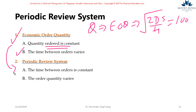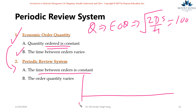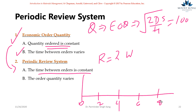On the other hand, for the periodic review system, the time between orders is constant. If I place an order on week two, and the review period is, say, two weeks, the next order I'll place on week four, then week six, then week eight — I cannot place an order in between. However, given that the demand is variable, the order quantity can vary.